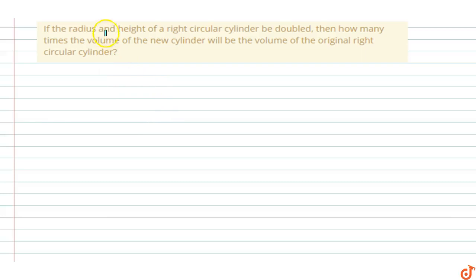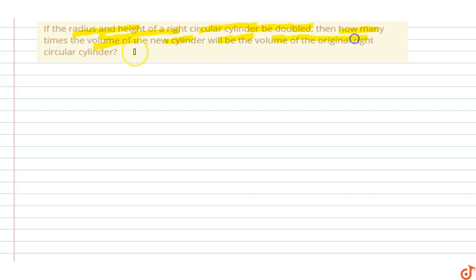In this question, if the radius and the height of the right circular cylinder are doubled, then how many times will the volume of the new cylinder be compared to the volume of the original right circular cylinder? Let's find out.